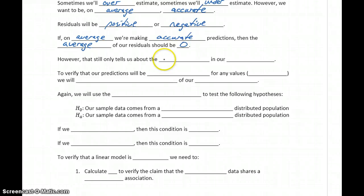But that still only tells us about the error in our sample data. It tells us whether, with the data that we have and that we know and can look at, our model is doing a good job of estimating those or not. So to verify that our predictions will be accurate for any value, essentially again for the population, the entire population of our two variables, we'll assess the normality of our residuals.